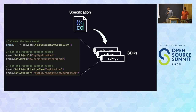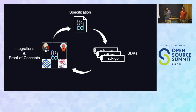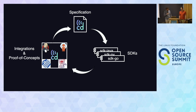With these SDKs and application code to produce events, we can work on integrations and proofs of concept to try out the things we are defining — and see what attributes are missing, what information is needed by an observer or receiver of these messages. And it sort of feeds back into a development cycle.